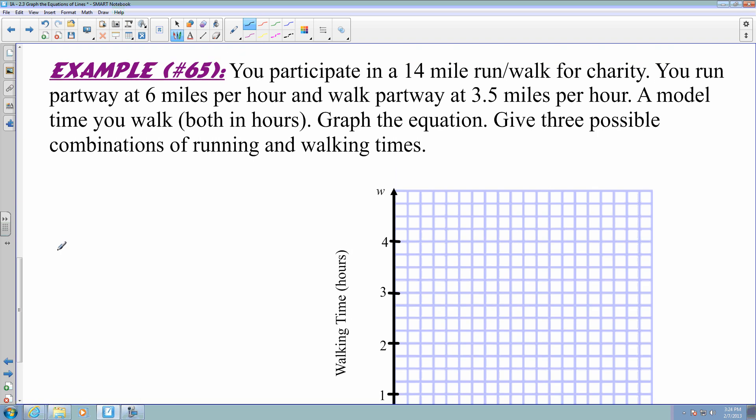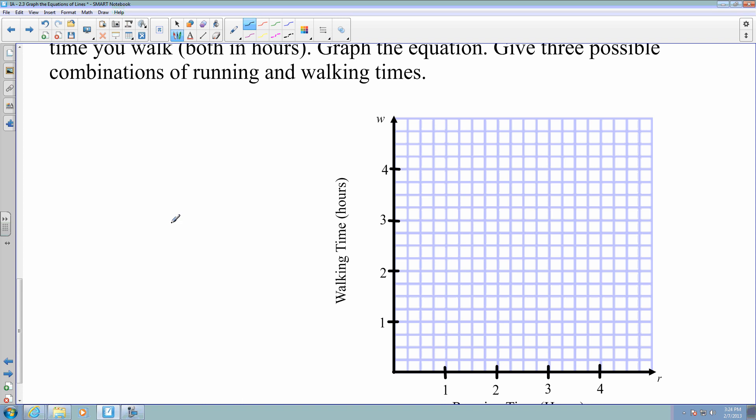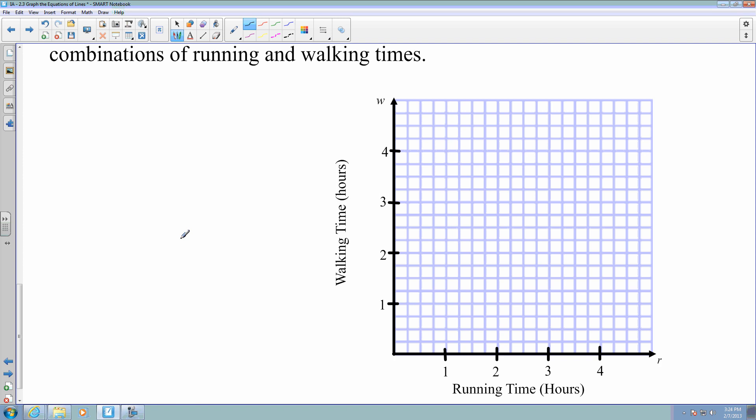Here I have an example. The problem states that you participate in a 14-mile run and walk for charity. You run partway at 6 miles per hour and walk partway at 3.5 miles per hour. The model represents time you walk, both in hours, and I'm asking you to graph the equation and then give three possible combinations of running and walking times. So if I look at this graph, everything that's on the y-axis is represented in walking time. Everything that can be represented on the x-axis represents the running time.